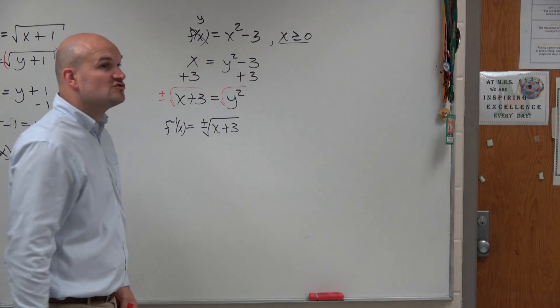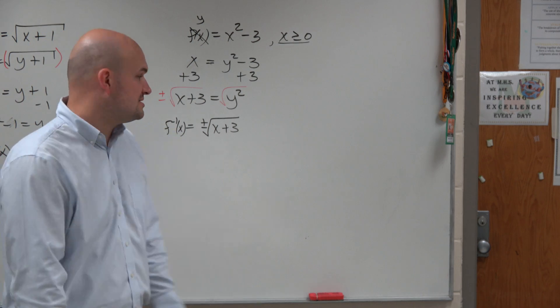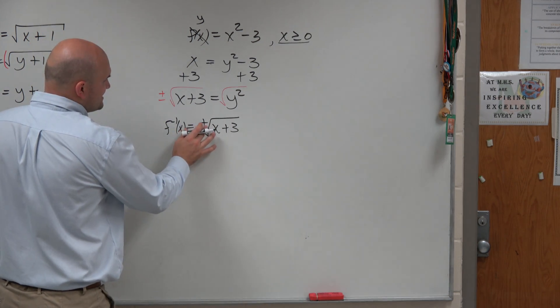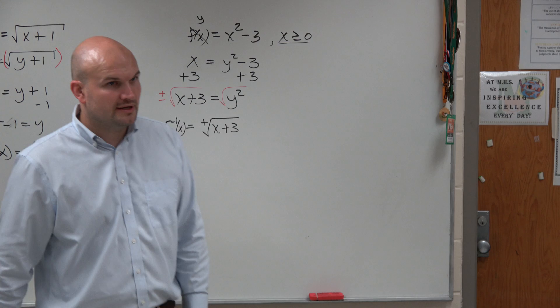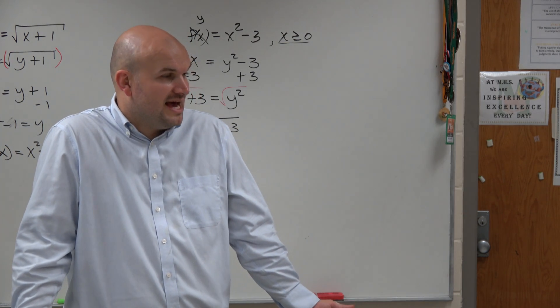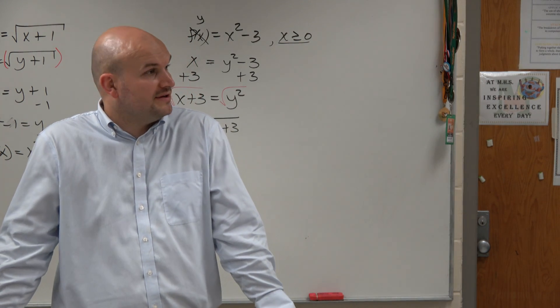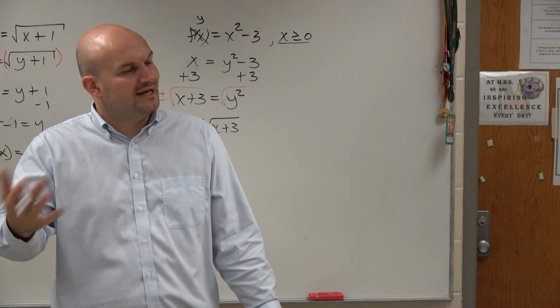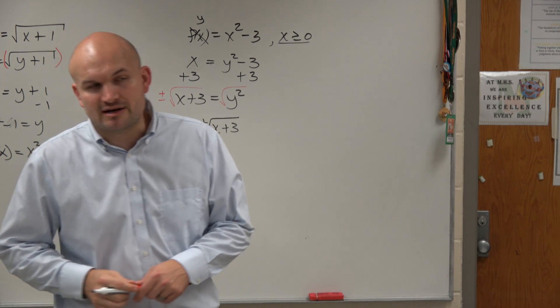This constraint says x is greater than zero. So what that means is we're only going to look at the positive form of the root. If you didn't have that, you would have to include both the positive and the negative, and what I'm telling you is that would produce an inverse that's not a function.